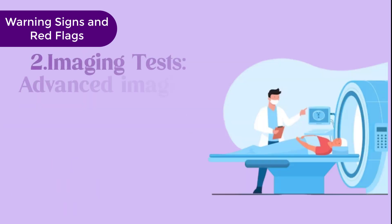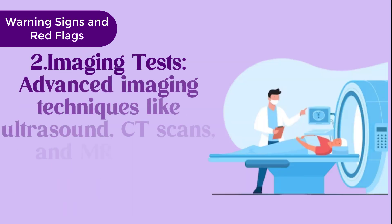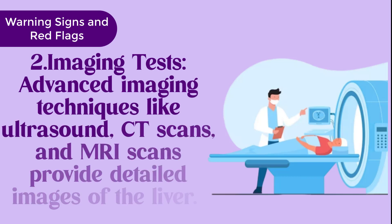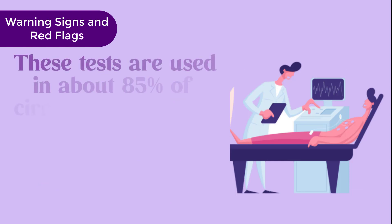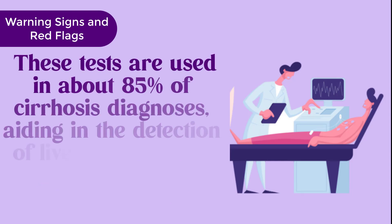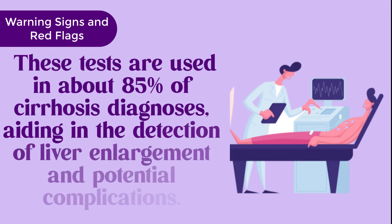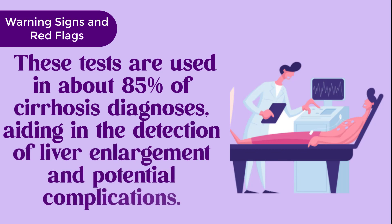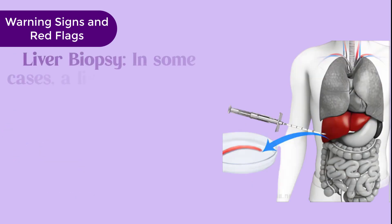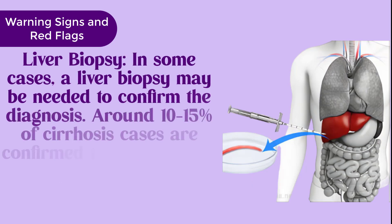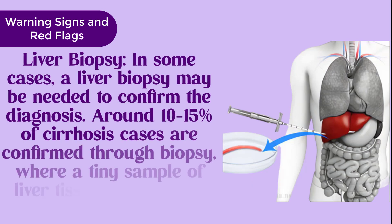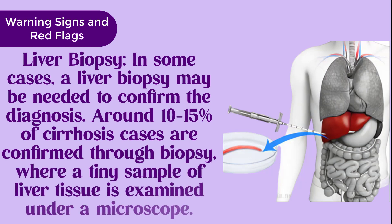Advanced imaging techniques like ultrasound, CT scans, and MRI scans provide detailed images of the liver. These tests are used in about 85% of cirrhosis diagnoses, aiding in the detection of liver enlargement and potential complications. In some cases, a liver biopsy may be needed to confirm the diagnosis — around 10–15% of cirrhosis cases are confirmed through biopsy, where a tiny sample of liver tissue is examined under a microscope.